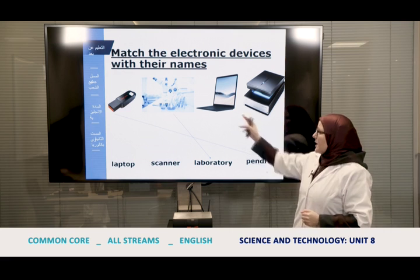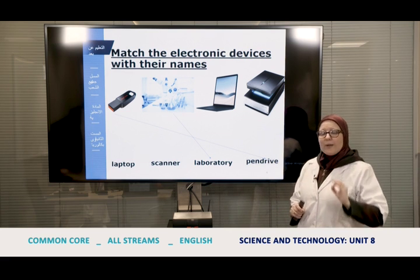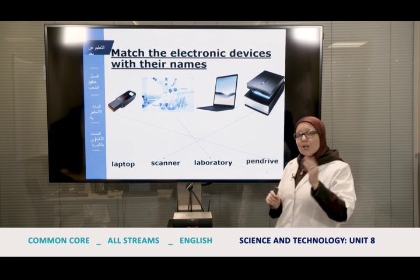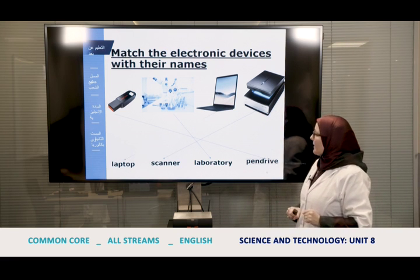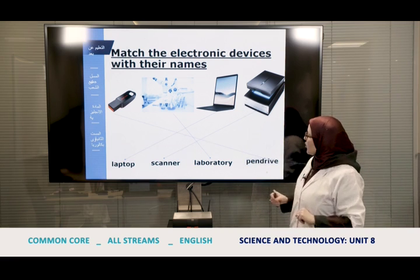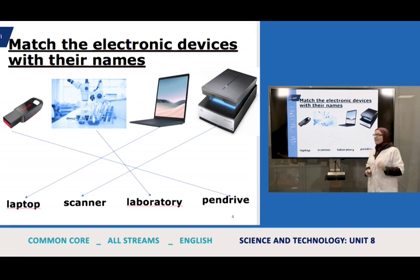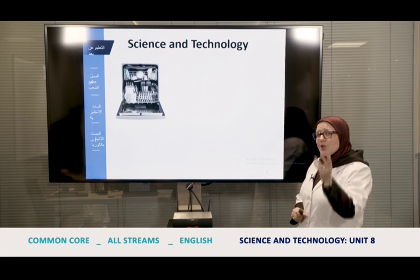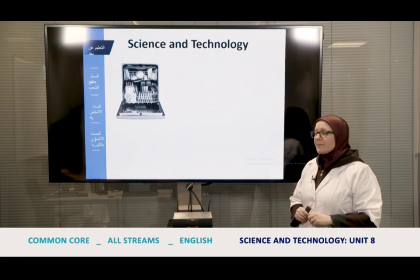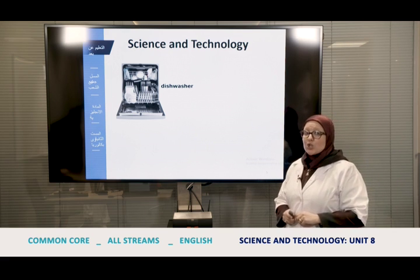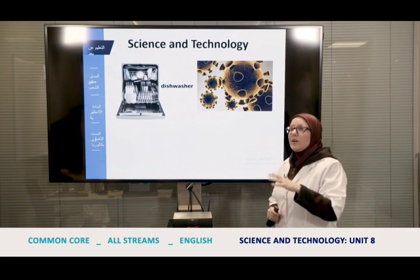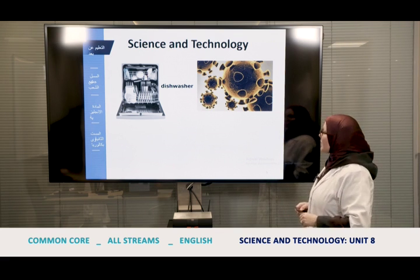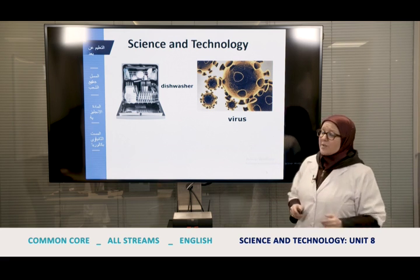The second one is 'laboratory' — it's the place where we conduct scientific research. The third one is a 'scanner' — repeat: scanner. The next one is a 'laptop.' We also have a 'dishwasher' — repeat: dishwasher. This device is more concerned with science. And this one is what we are all afraid of nowadays — it's a 'virus' — repeat: virus.